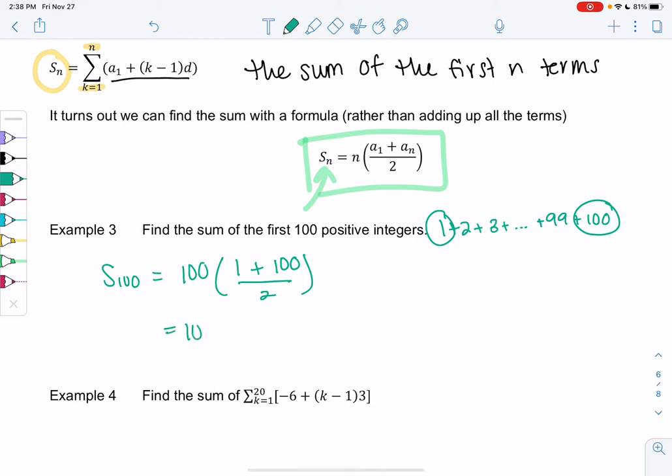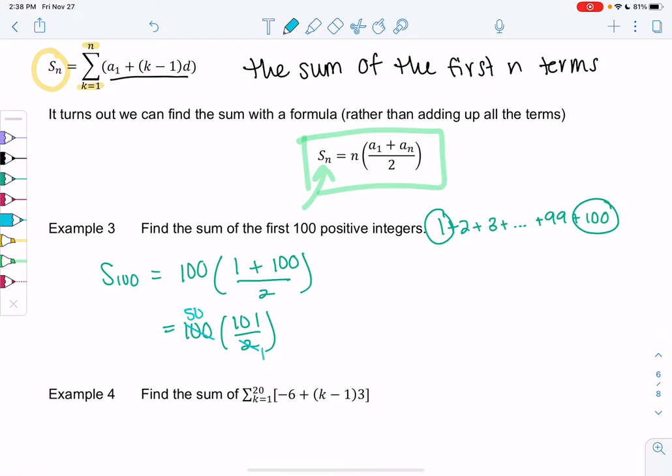So we get 100 times 101 over 2. We can do this without a calculator. 102 gives me 50 and 1. So we get 50 times 101, which would be 5050. So if you added 1 through 100, you would get 5050. But we just found a better way to do that.